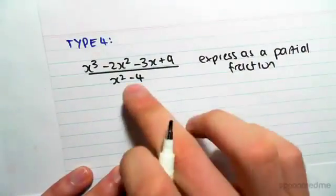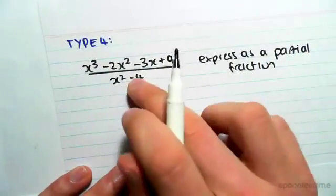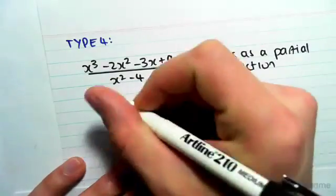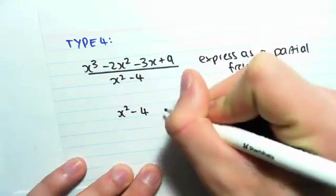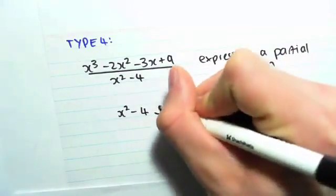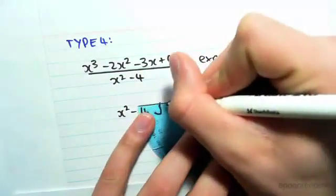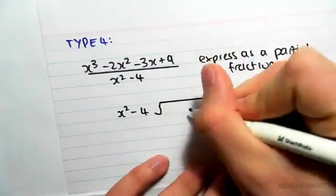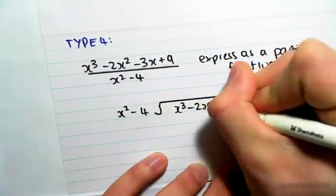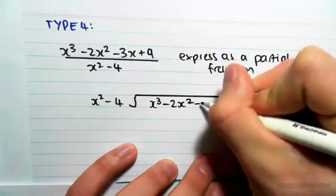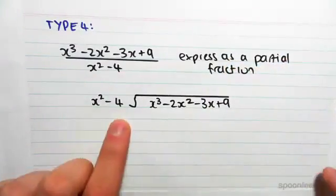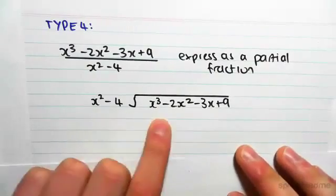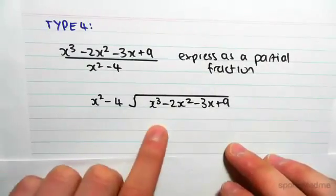So we're going to literally divide x squared minus 4 into our quadratic, into our cubic over there. So we're going to have x squared minus 4, I just want to be as neat as possible. We're going to divide this into x cubed minus 2x squared minus 3x plus 9. Okay, so that's what we're going to do. Now the first step of this procedure is you want to work out